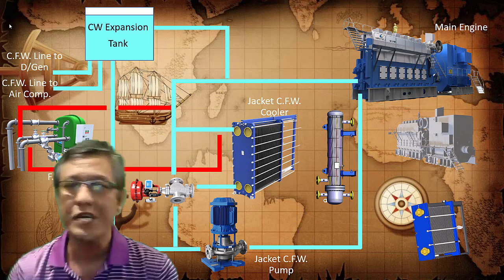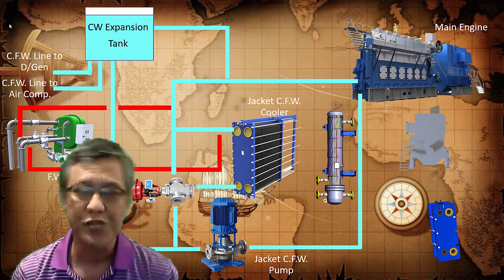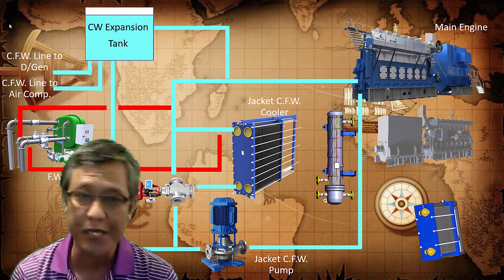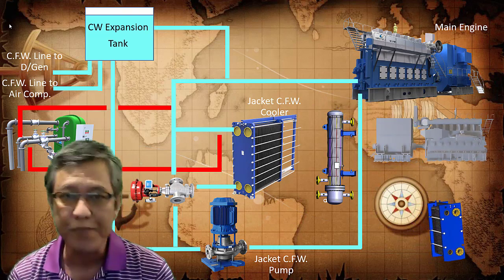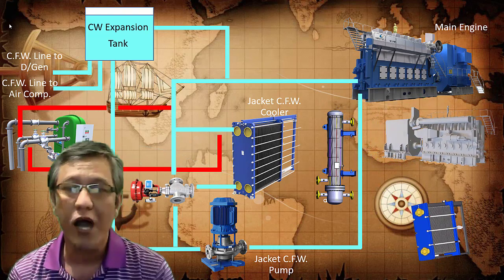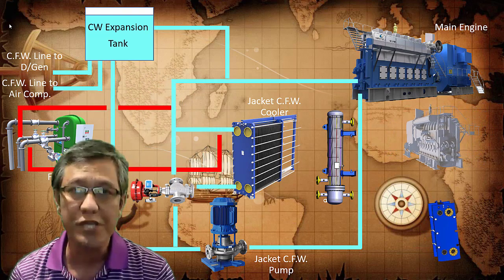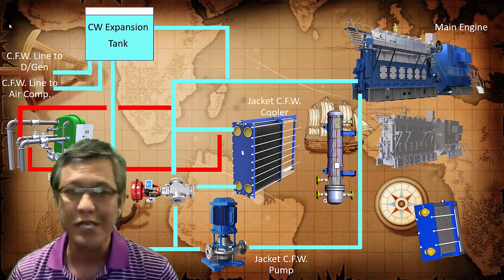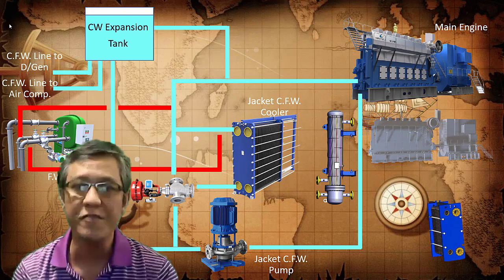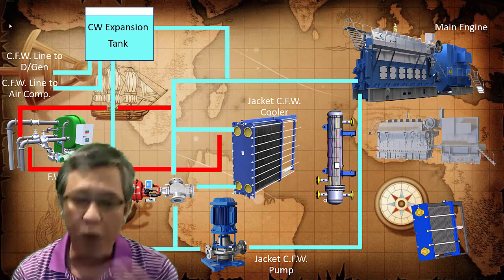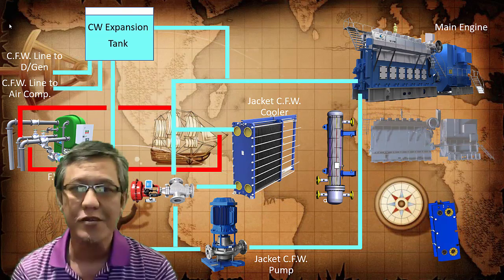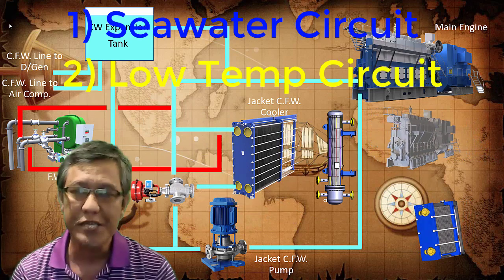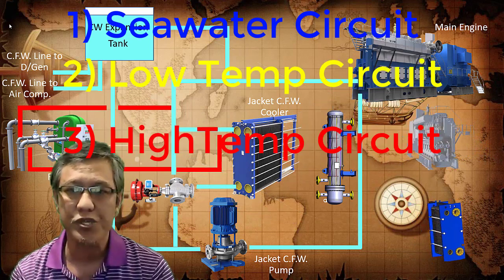Let's try to understand the central cooling system. As you can see in this block schematic diagram, the main machinery on ships is cooled down using circulating fresh water. Generally, it comprises three different circuits: one is the seawater circuit, two is the low temperature circuit, and three is the high temperature circuit.